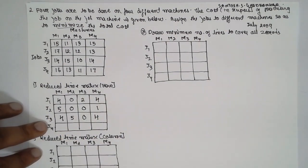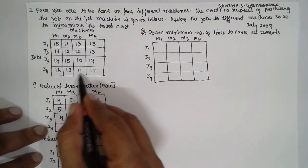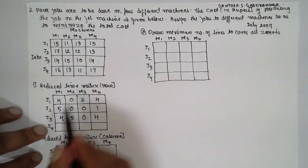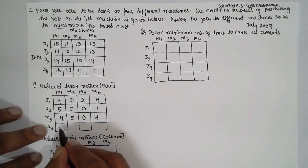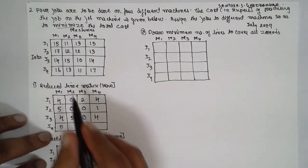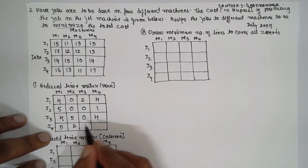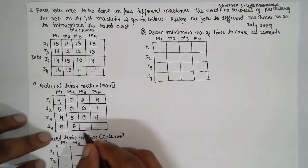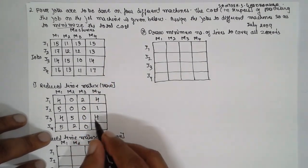In row 4, the smallest is 11: 16−11=5, 13−11=2, 11−11=0, 12−11=1, 17−11=6. This completes the row-wise reduction of the matrix.